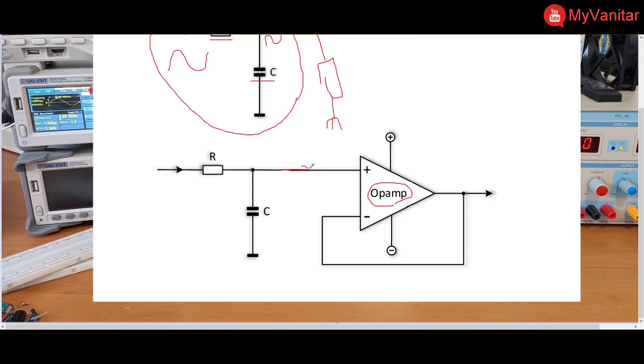And connect the negative input of the op-amp to the output. So as you can see, it is a basic voltage follower configuration for the op-amp, and it solves the problem.